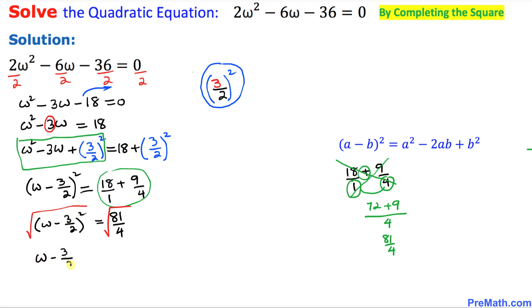On the left hand side we have ω - 3/2 equals to, 81 divided by 4, the square root is going to become 9/2 with a plus or minus sign.